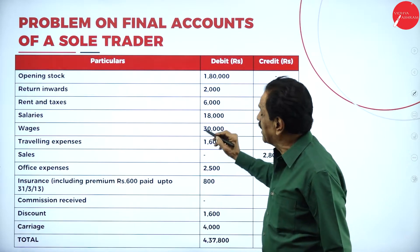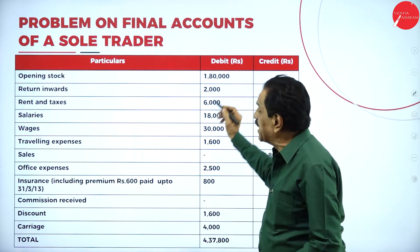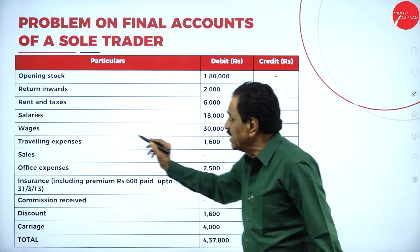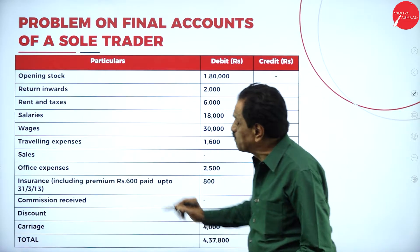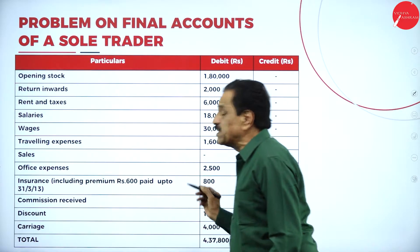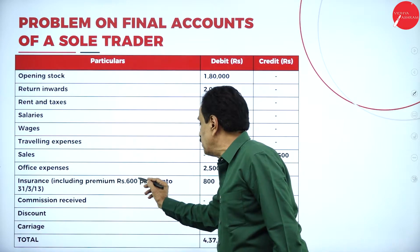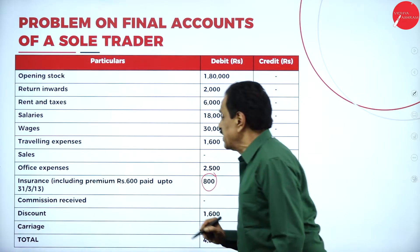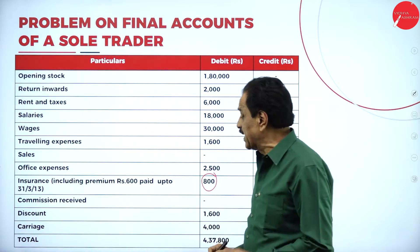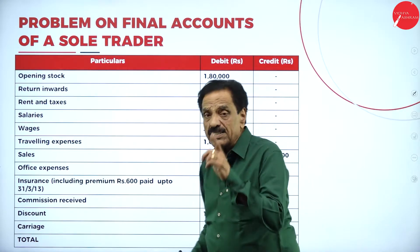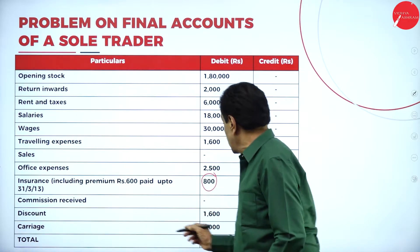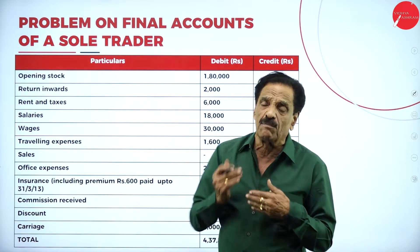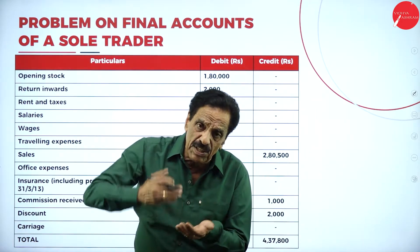Opening stock comes under the trading account. Return inward means sales return — that should be deducted from sales. Rent and taxes go in the profit and loss account. Salary goes in the profit and loss account. Wages go in the trading account. Travelling expenses go in the profit and loss account. Sales go in the trading account on the credit side. Office expenses go in the profit and loss account. Insurance — 600 paid up to 31-3-2013, which I will explain. Commission received comes in the profit and loss account on the credit side. Discount allowed goes on the debit side; discount received goes on the credit side. Carriage — when only 'carriage' is mentioned, it means carriage inward, which comes in the trading account. Carriage outward comes in the profit and loss account. Carriage inward means raw material is coming in; carriage outward means finished goods going out.